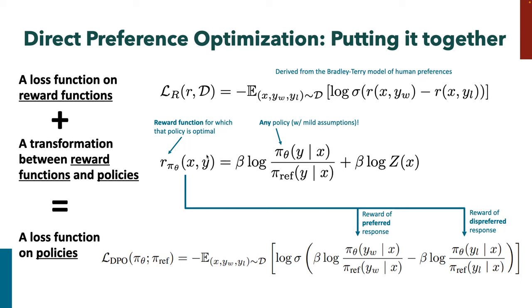The DPO loss is really just the reward model loss, except since we have this identity relating a policy to a reward function, we turn the loss on reward functions directly into a loss on policies. Another way to think about it: instead of training a reward model and then training a policy to get high reward, we are training a policy pi_theta which is the optimal policy for a reward function that satisfies the Bradley-Terry model for our preference data. Substituting in, the log Z term cancels and we end up with a simple classification objective — no rollouts needed during training.